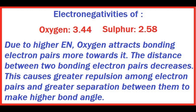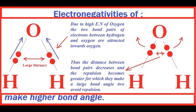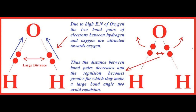In water, oxygen has a higher electronegativity of 3.44 than sulfur, which has 2.58. Due to the higher electronegativity of oxygen, it attracts the bond electron pair more towards it, due to which the distance between the bond pair decreases.